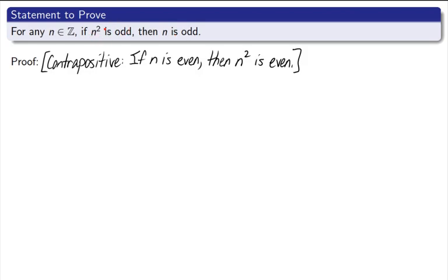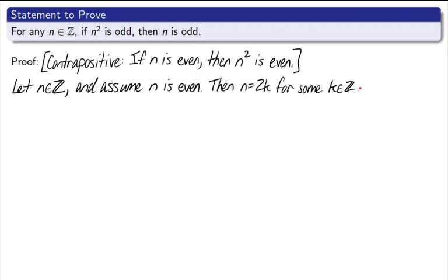Now let's prove the contrapositive. First thing I need to do is simply choose an arbitrary n from the integers. Let n be an element of the integers, and assume n is even. Well what does that mean? Remember for an even number, that means it's equal to twice some integer. Then n equals 2k for some k in the integers.